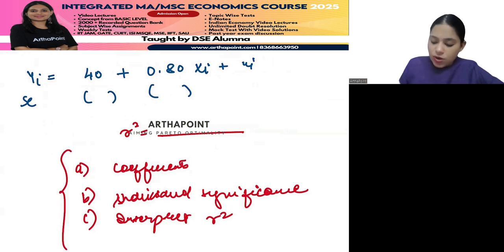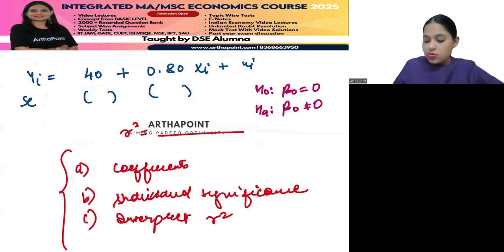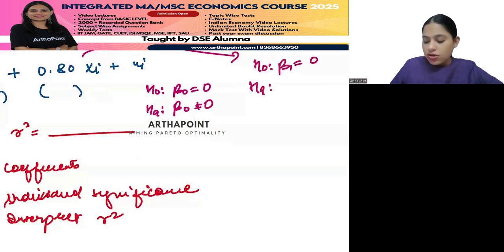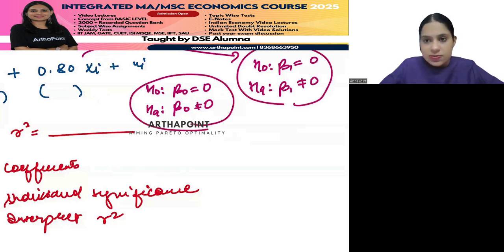You have to find the null hypothesis β = 0 vs alternative β ≠ 0. Specifically, null: β1 = 0, alternative: β1 ≠ 0. They will also ask you to interpret R-squared. I have done all these kinds of questions multiple times in class. This can be the next kind of question asked in the exam.